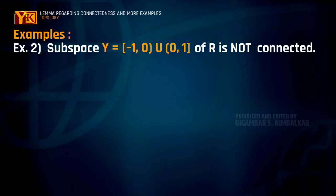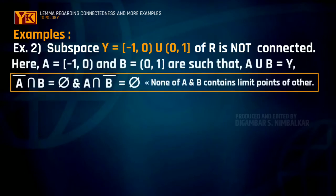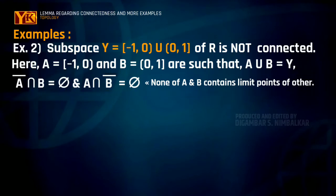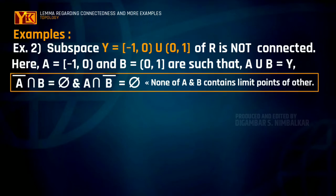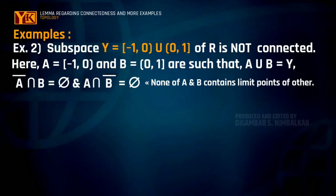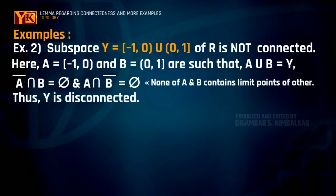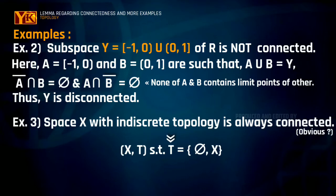Now consider subspace Y = [-1, 0) ∪ (0, 1], which is a subspace of topological space ℝ. If A = [-1, 0) and B = (0, 1], then these two sets have empty intersection and their union equals the whole subspace Y. Furthermore, neither A nor B contains the limit points of the other. Thus Y is separated by sets A and B, and Y is not a connected space.